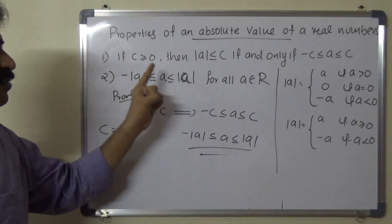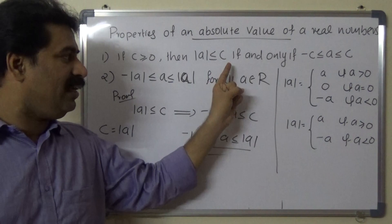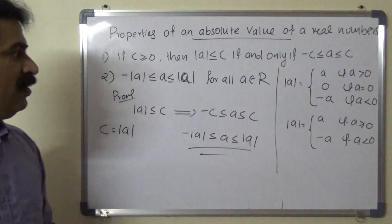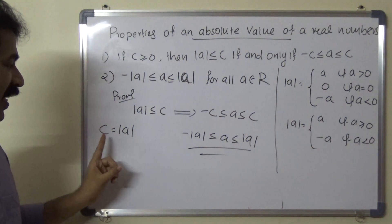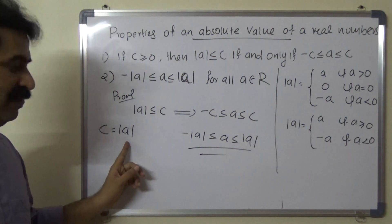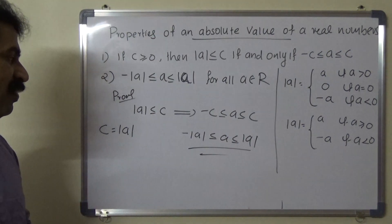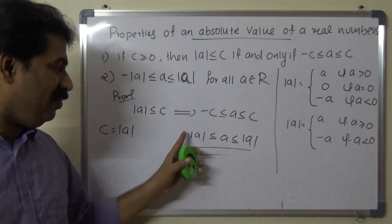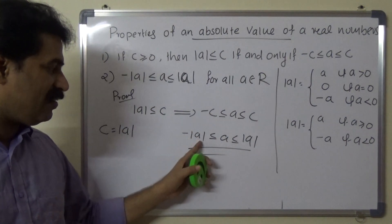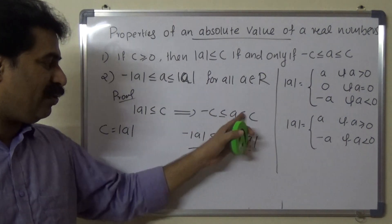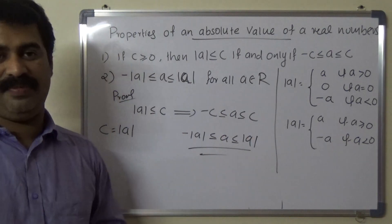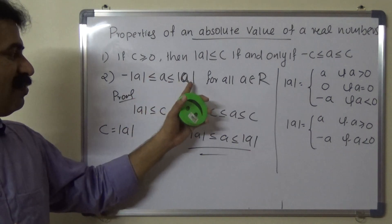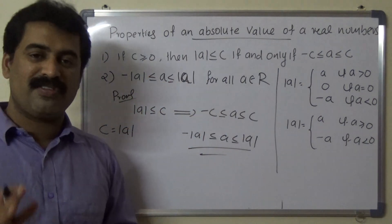So we apply the first property: if C greater than or equal to 0, then modulus A less than or equal to C if and only if minus C less than or equal to A less than or equal to C. We assume C equals modulus A, substitute into the inequality, and we have proved minus modulus A less than or equal to A less than or equal to modulus A for all A belonging to R.